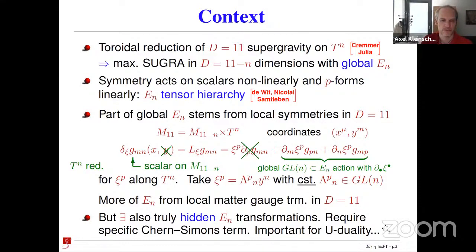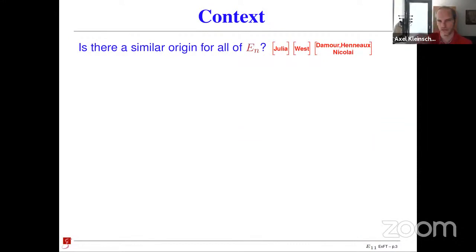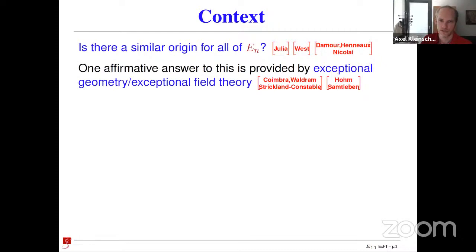This has been known for some time, and one can ask: is there a similar geometric origin for the hidden E_N transformations? This question has been asked by many people over the years — I listed some of the most important ones. One affirmative answer is provided by exceptional geometry, a version of generalized complex geometry, and there is something that goes with this called exceptional field theory.